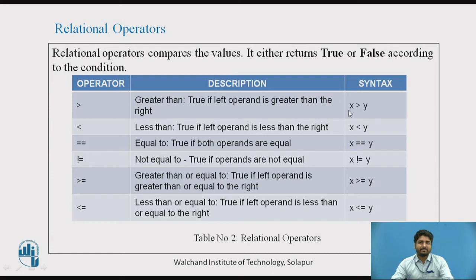If x is greater than y, it shows the output as true or false. This is less than symbol. For equal to we use two equal signs (==). For not equal to, exclamation mark and equal to (!=). Greater than equal to, and this symbol is for less than or equal to. This is the syntax. We will understand in the next slide with an example.